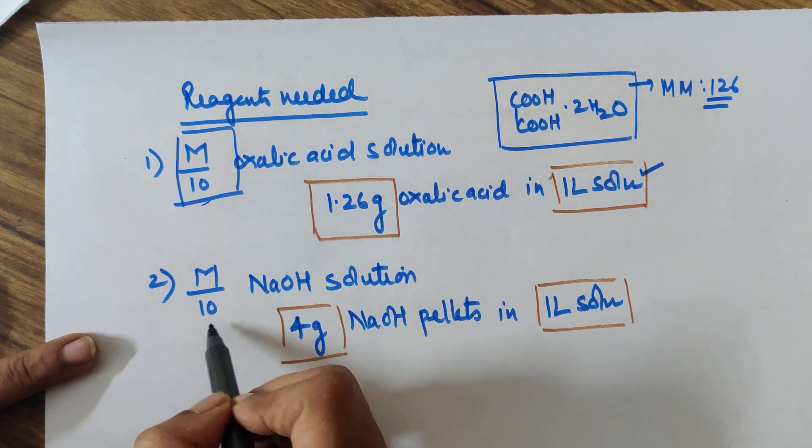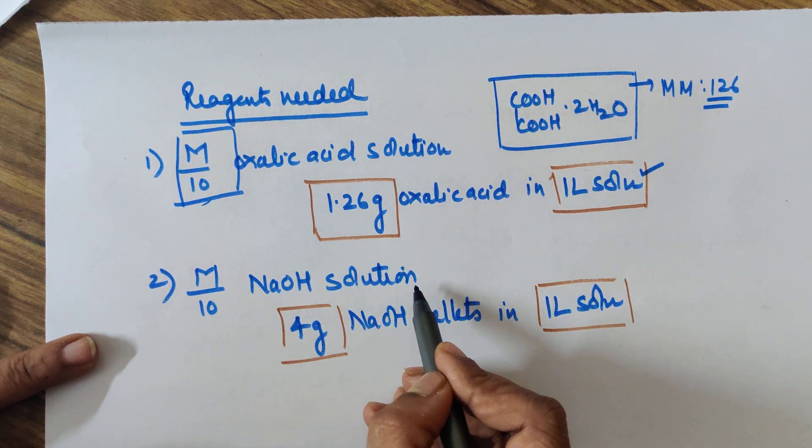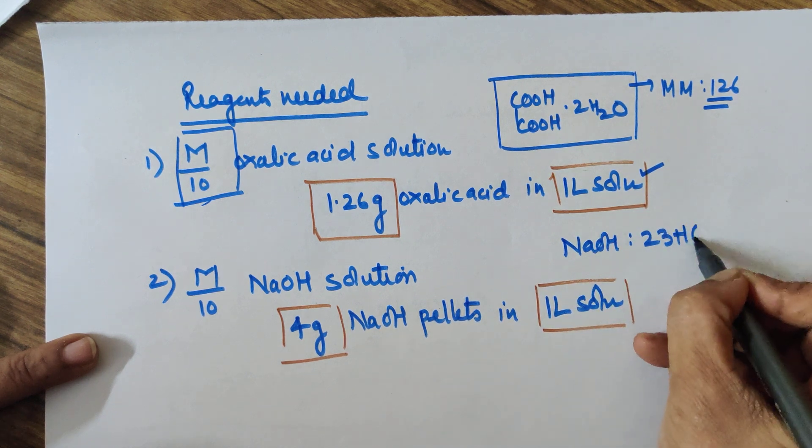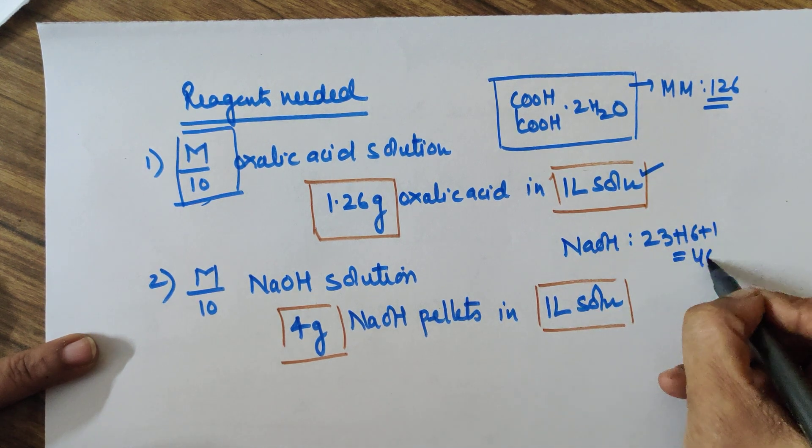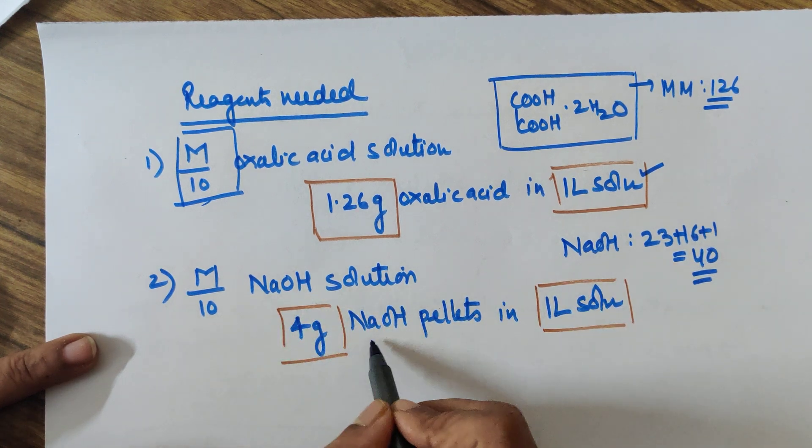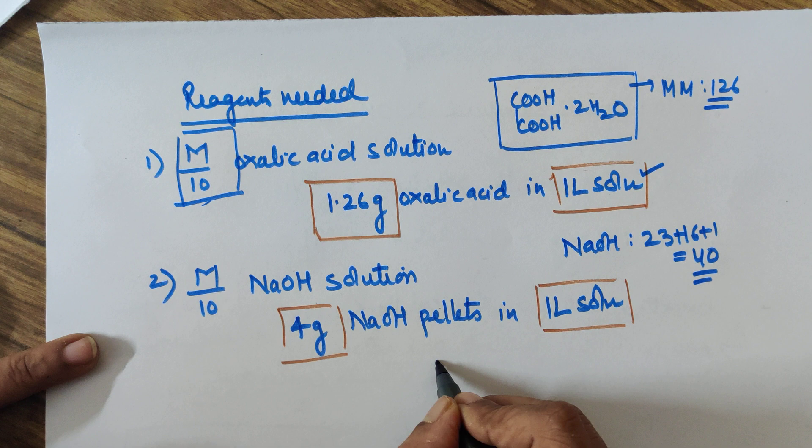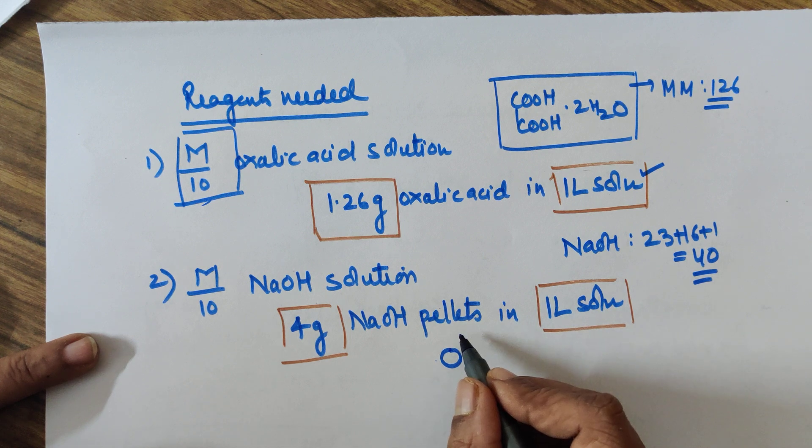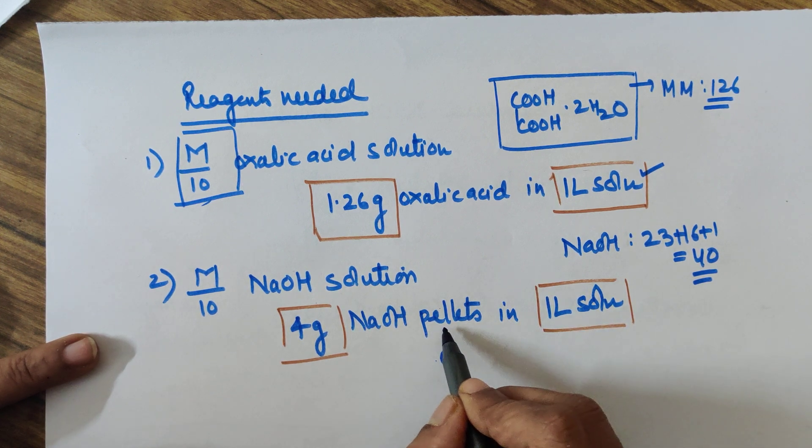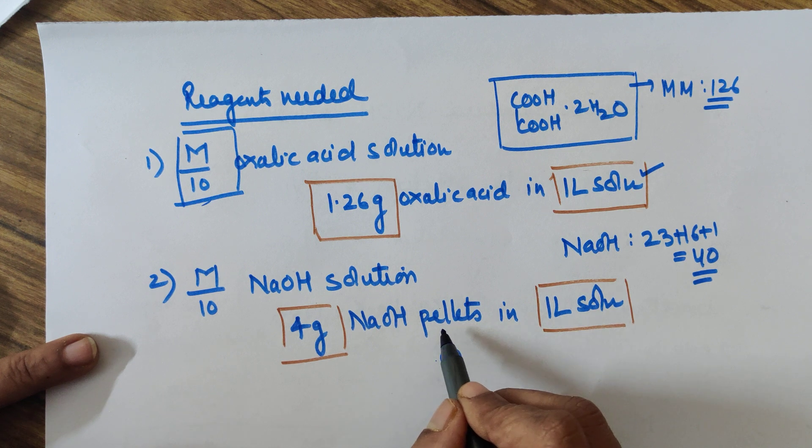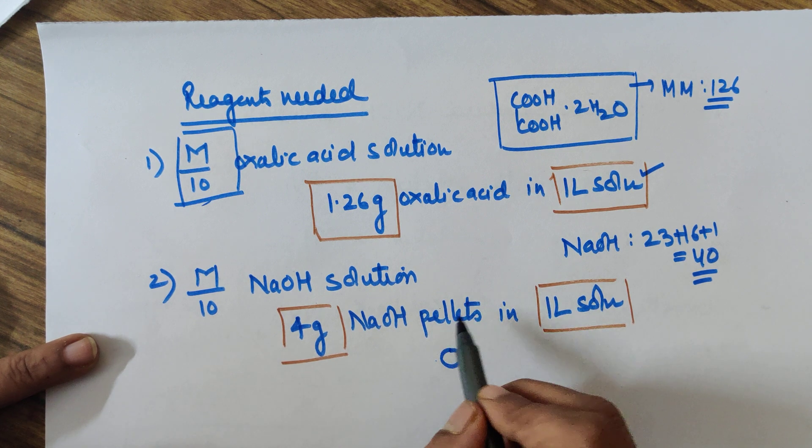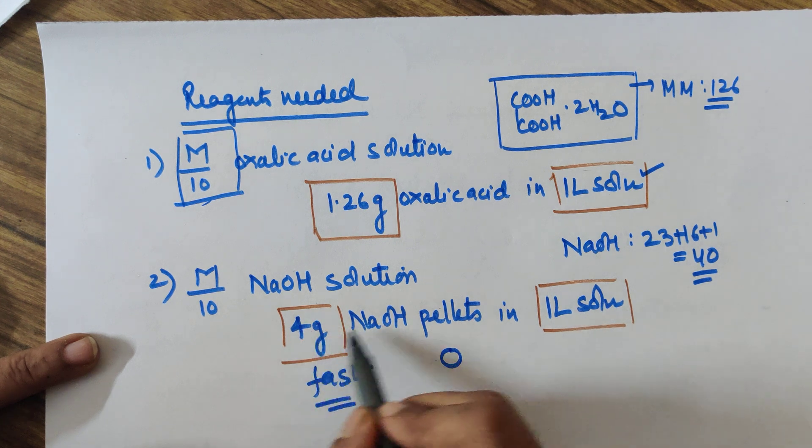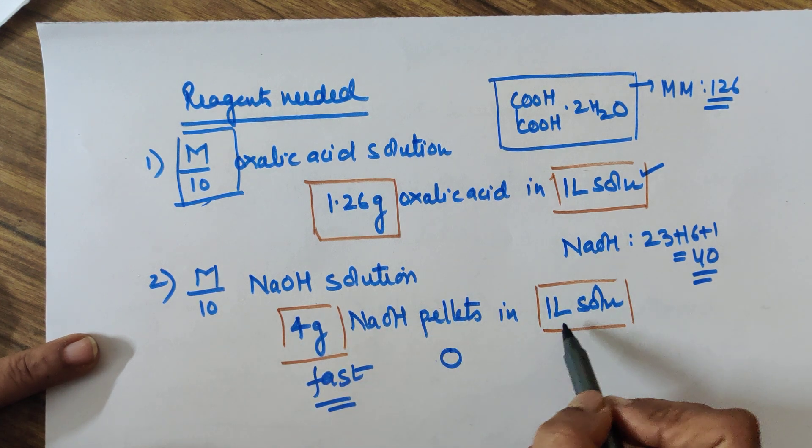The second thing that you require is an M by 10 NaOH solution. Now NaOH's molecular mass comes out to be 23 plus 16 plus 1, which is equal to 40. On that basis, you will require 4 grams of NaOH pellets. Take those pellets and be quick because it absorbs moisture from the atmosphere. It will go wet easily, so please use the pellets and be fast.